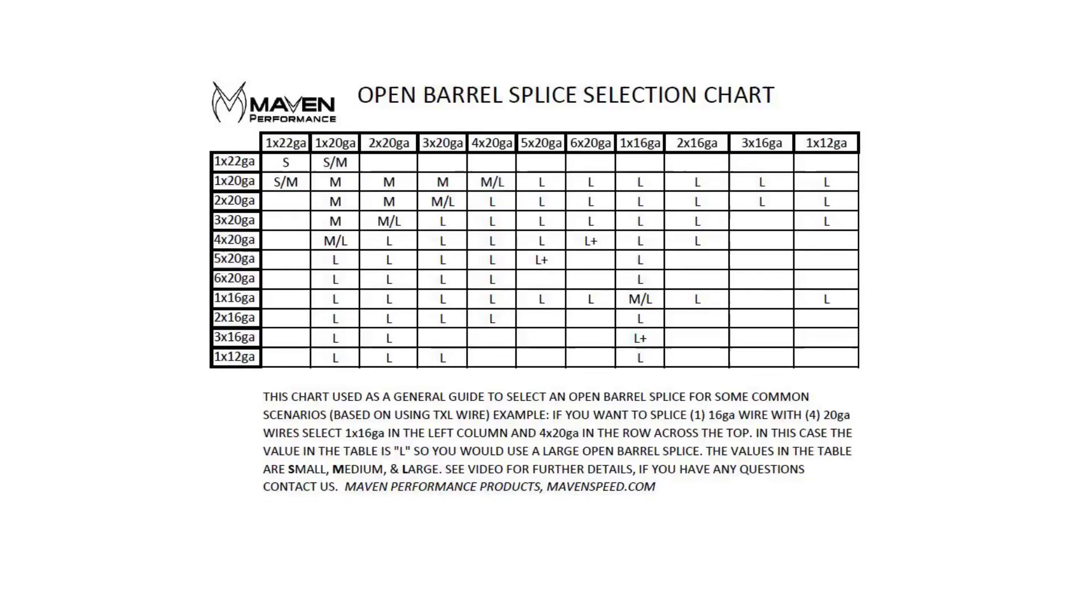If you look on the left column and go to two 20-gauge, and you go over on the top row to a single 20-gauge, that's going to give you a medium splice. So that's the one we would use to split that. Keep in mind, you can use splicing for anything.